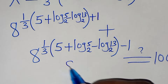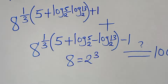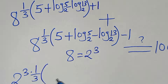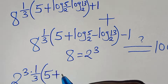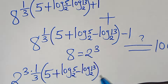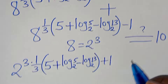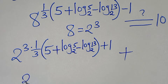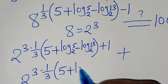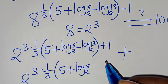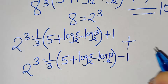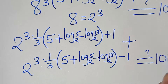We express 8 as 2^3. So each term becomes 2^3 raised to the appropriate power. For the first term, the exponent is (1/3)(5 + log_2(5) − log_2(13)) + 1, and for the second term it is (1/3)(5 + log_2(5) − log_2(13)) − 1. This should equal 100.